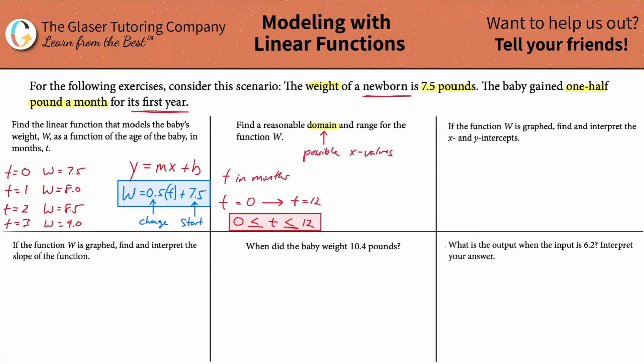And then the range, now, the range is just the possible y values. So the question is, what's the smallest y value, a.k.a. weight? Remember, this is weight in pounds. What's the smallest weight the baby is in this model? Well, it's the weight when he or she is born, at 7.5 pounds. So the weight here could start at 0 and it could go all the way up to what? How heavy can the baby be? What's the baby's heaviest weight in the first year? We'd say after it reaches 12 months.